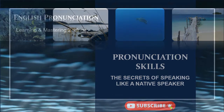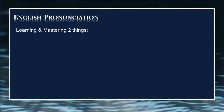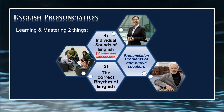We're going to start with the introduction. Learning and mastering two things is important to develop your English language: pronunciation and the correct rhythm of English. Pronunciation problems of non-native speakers are related to these two things. First, the individual sounds of English — we need to study the vowels and the consonants. Second, the correct rhythm of the English language, as every language in the world has its own rhythm.